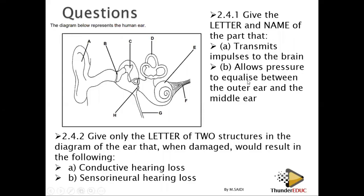Another question: allow pressure to equalize between the outer ear and the middle ear. This means it equalizes pressure on either side of the tympanic membrane. The answer is G — the Eustachian tube.